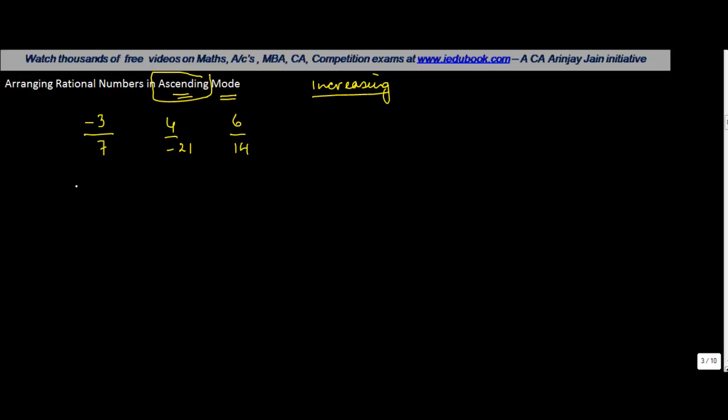The process is the same as when we compared two fractions. The only difference is in this case you have three fractions. So to arrange this in ascending order, what we need to do is first convert all denominators into positive numbers.